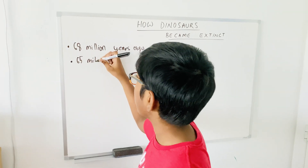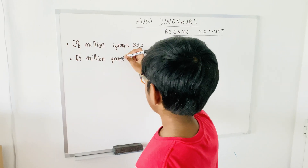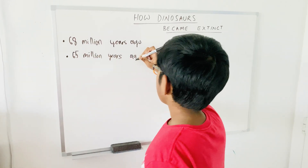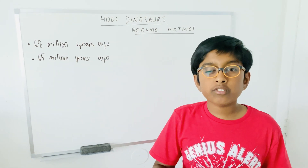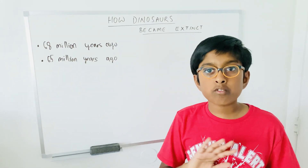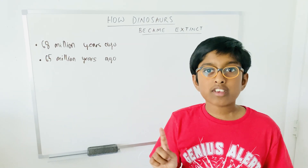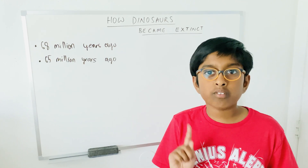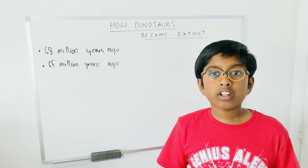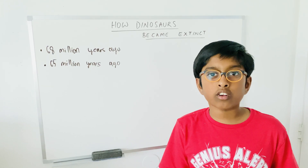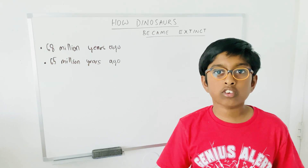65 million years ago, a really heavy and really big asteroid made its way toward Earth. Remember guys, any asteroid larger than one kilometer can destroy whole countries and can also harm the entire civilization.